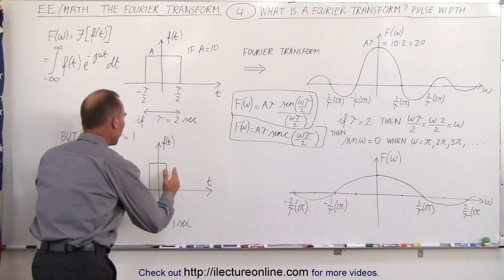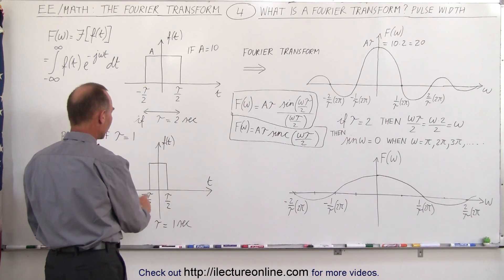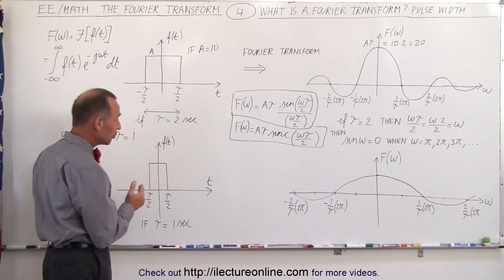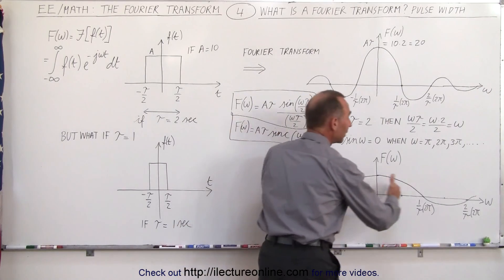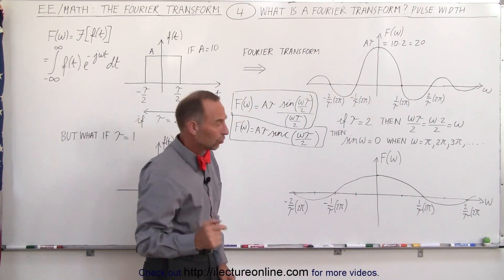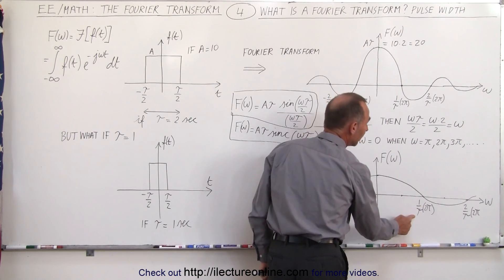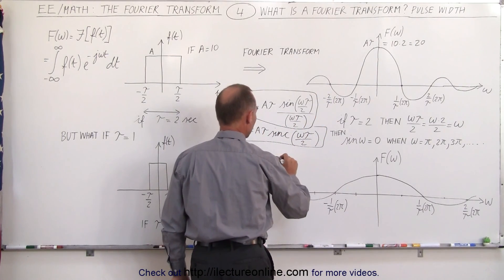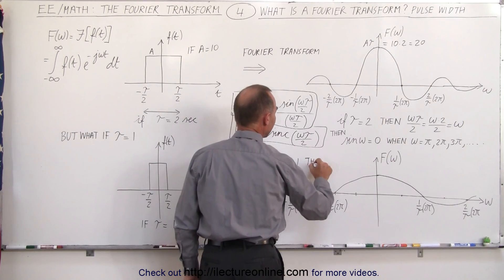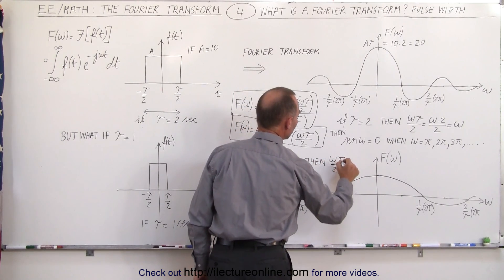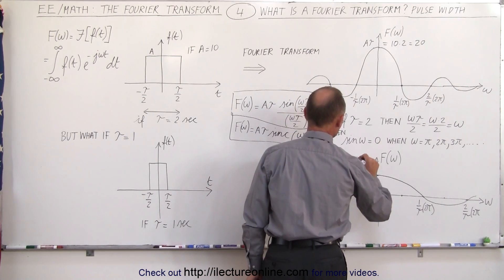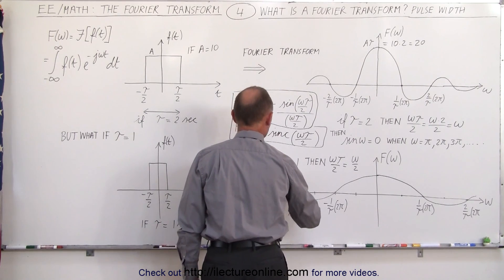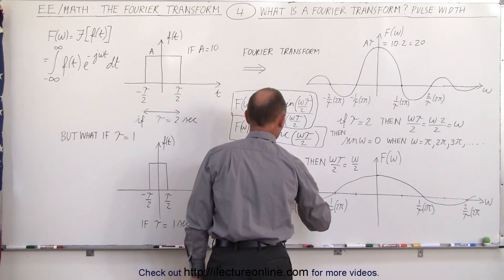What happens when we make the pulse narrower? We still go from minus tau/2 to tau/2, but now tau is only 1 second. It turns out the whole function widens when we take the Fourier transform. With tau equal to 1, omega·tau/2 becomes omega divided by 2.